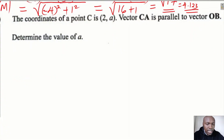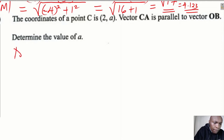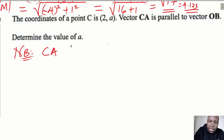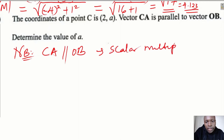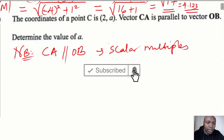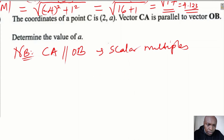The last part: the coordinates of point C are (2, a), and vector CA is parallel to vector OB. We need to determine the value of a. If two vectors are parallel, they must be scalar multiples of each other — there exists a scalar between the two vectors. This is the key condition for parallelism.